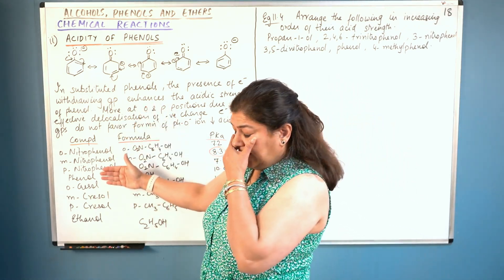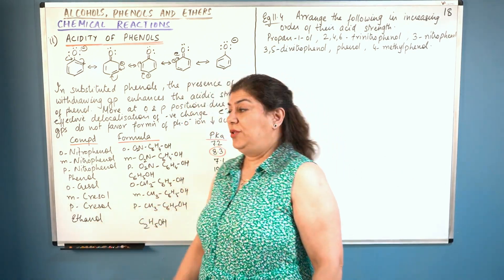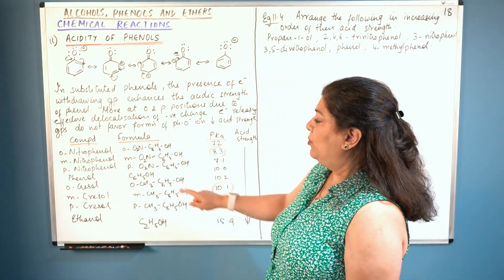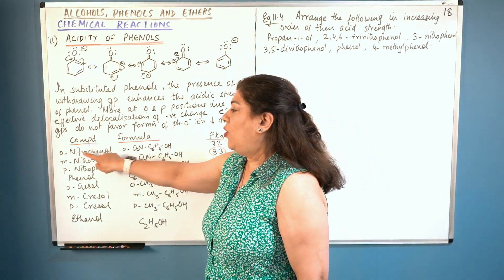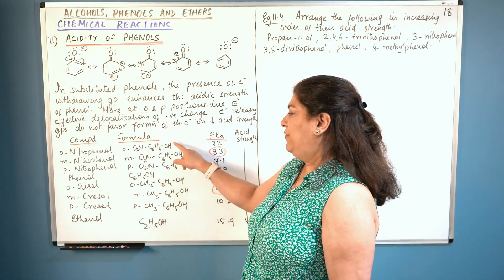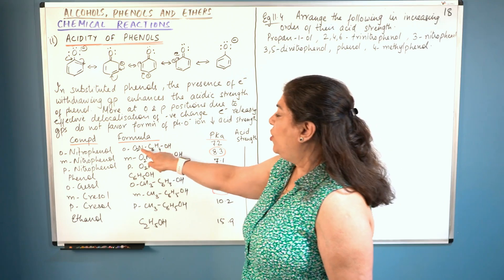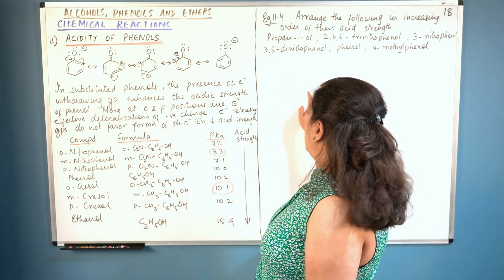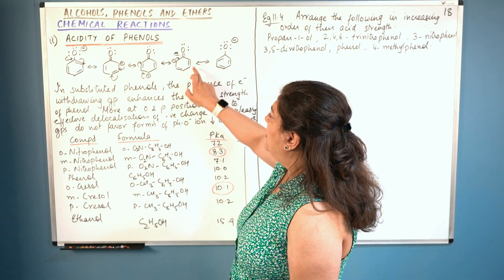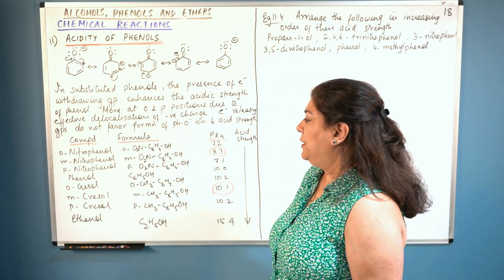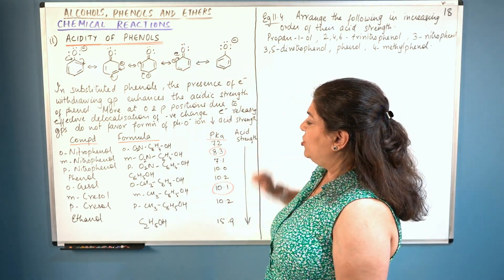This is the sequence of acidic strength, and at the end comes ethanol. Comparing pKa values: the lower the pKa value, the stronger the acid; the higher the pKa value, the more basic the character. The pKa of ortho-nitrophenol is 7.2. Phenol has a pKa of 10, so nitrophenol is much more acidic, meaning its pKa value decreases. Ortho-nitrophenol has pKa 7.2, meta is 8.3, and para is 7.1 — ortho and para are almost similar but meta is slightly higher.